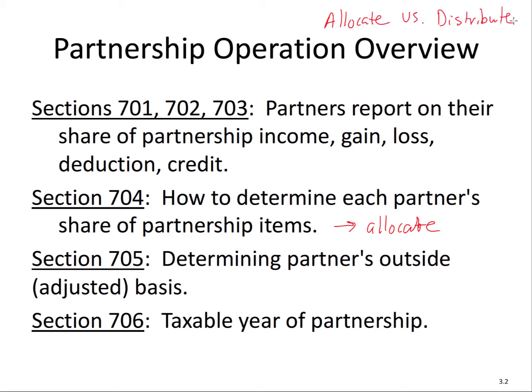A partnership does not pay tax — it flows through to the individual owners. However, every year a partnership allocates income, loss, deduction, credits, and gains to the partners — even if they're not distributed. Distributed means that cash or property is actually being distributed from the partnership to the owners. Allocated is just on paper: it's what each respective partner has to report on his or her share. It's important to understand those two distinctions.